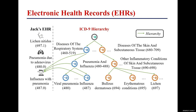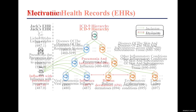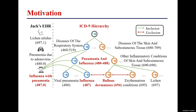Nowadays, existing works usually enhance diagnosis prediction while learning accurate disease representation based on EHRs. A common approach among these works involves leveraging the hierarchical relations inherent in the ICD-9 codes. However, this approach primarily focuses on inclusion relations and tends to overlook the equally important exclusion relations between ICD-9 codes, which offer distinct and complementary insights into the ICD-9 structures.